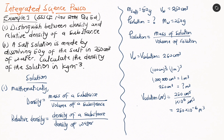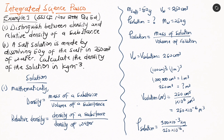Now that we have the volume of the solution and the mass of the solution, we can calculate the density. The density of the solution equals the mass — 300 × 10⁻³ kg — divided by the volume — 250 × 10⁻⁶ m³. Dividing these gives us 1200 kilograms per meter cube as the density of the solution.